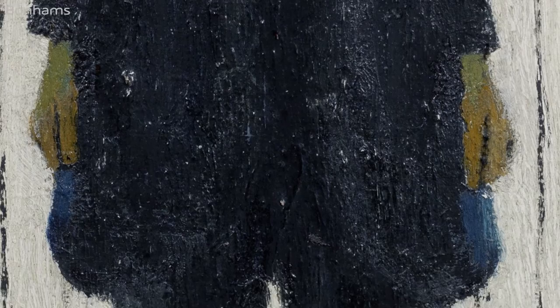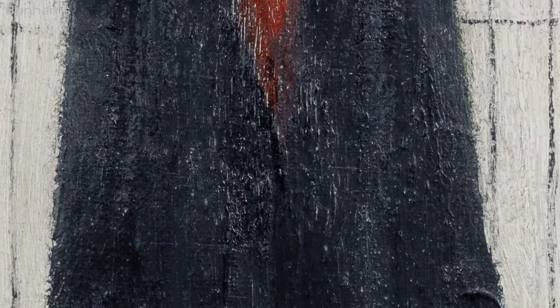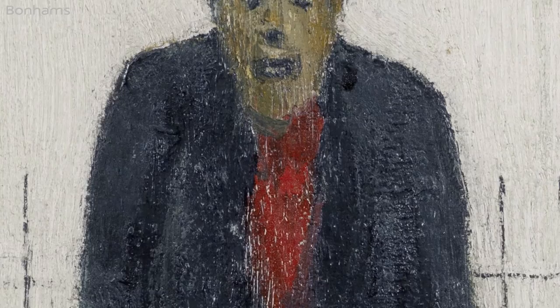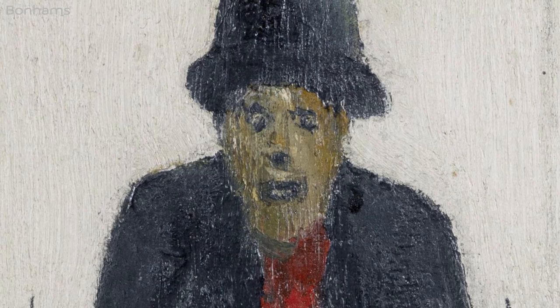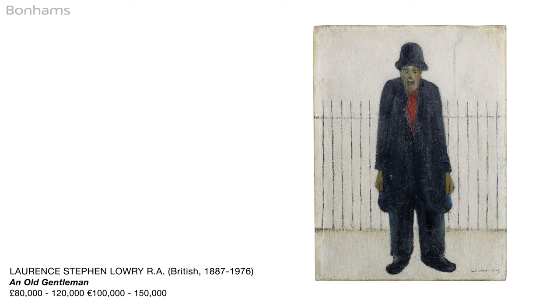A figure has been plucked from the streets for us to observe at close quarters. Lowry was fascinated by the bizarre and the grotesque, and there is certainly a strangeness to this solitary figure of a man clothed head to toe in black with just a flash of trademark red visible below his chin. Lowry described these figures as real people whom you might see in the street or park, isolated within their world by the gates behind them.